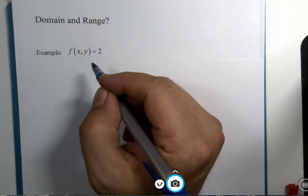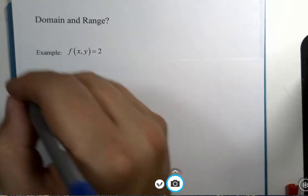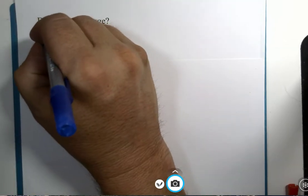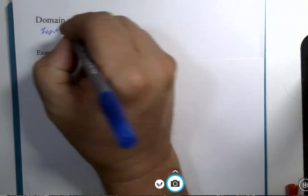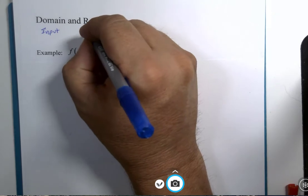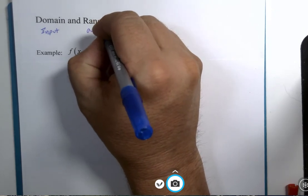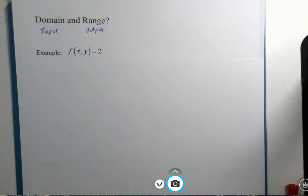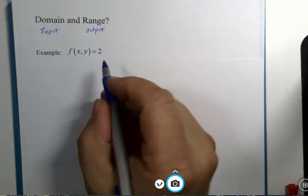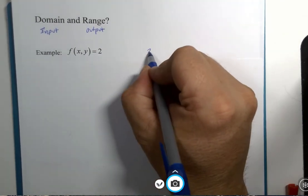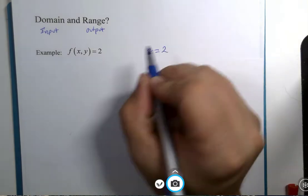What domain and range represent are basically we have our input and we have our output. We cannot call them just x and y anymore because we know that this particular function here really means that z equals 2.